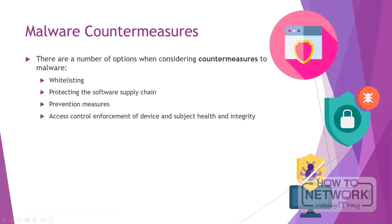There are a number of things to consider when considering malware countermeasures. For example, whitelisting provides control over what is allowed to be installed and executed on systems. Protecting the software supply chain can provide methods of only allowing digitally signed code from known sources to run. Prevention measures are attempts to keep malware from getting a foothold in the system. Access control enforcement of device and subject health and integrity involves quarantining and remediating subjects. Whitelisting can be enforced by examining all incoming email or restricting classes of subjects or end users from browsing to or establishing connections to sites which are not on the trusted sites list maintained organizationally.